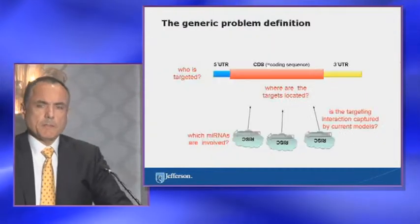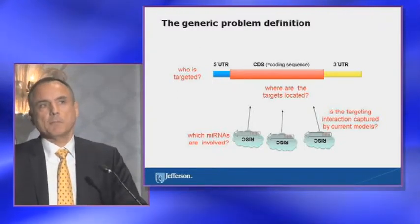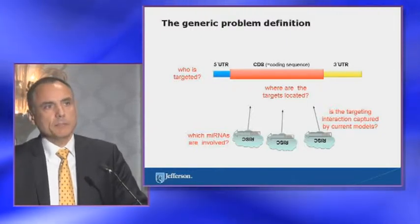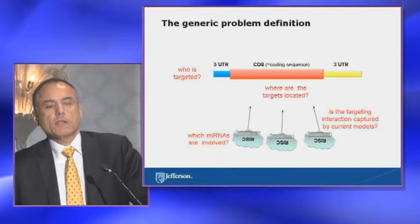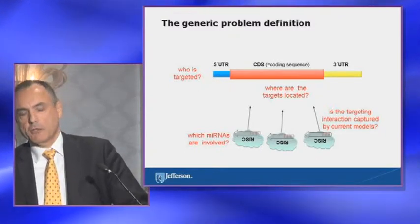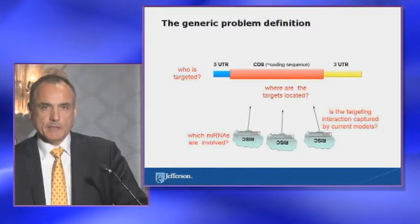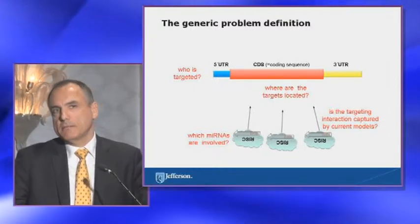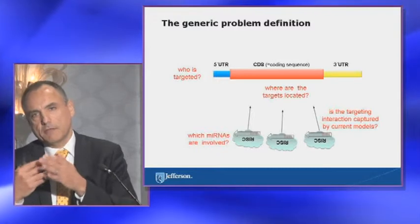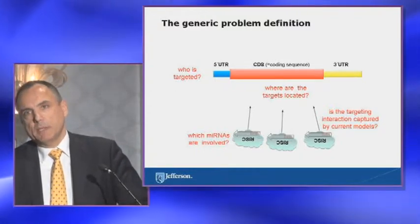What is the generic problem definition we are dealing with? A typical messenger RNA has three distinct regions: the 5' untranslated region, the coding region that makes the amino acid sequence, and the 3' untranslated region. The questions we have to address are: who is targeted — what genes are targeted by microRNAs? Which microRNAs are loaded on the RISC complex? Where are the targets located — in the 3'UTR, elsewhere, or outside messenger RNAs? And finally, is the molecular interaction between the microRNA and the target captured by current models?